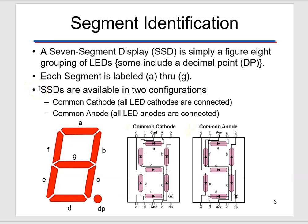I was clicking on my keyboard and was moving the frame for my video instead of moving the PowerPoint. So those segments in this figure eight pattern are labeled A, B, C, D, E, F, and G, and sometimes even another one, DP for decimal point. So they start at the top and go in this clockwise order alphabetically with the G in the middle.